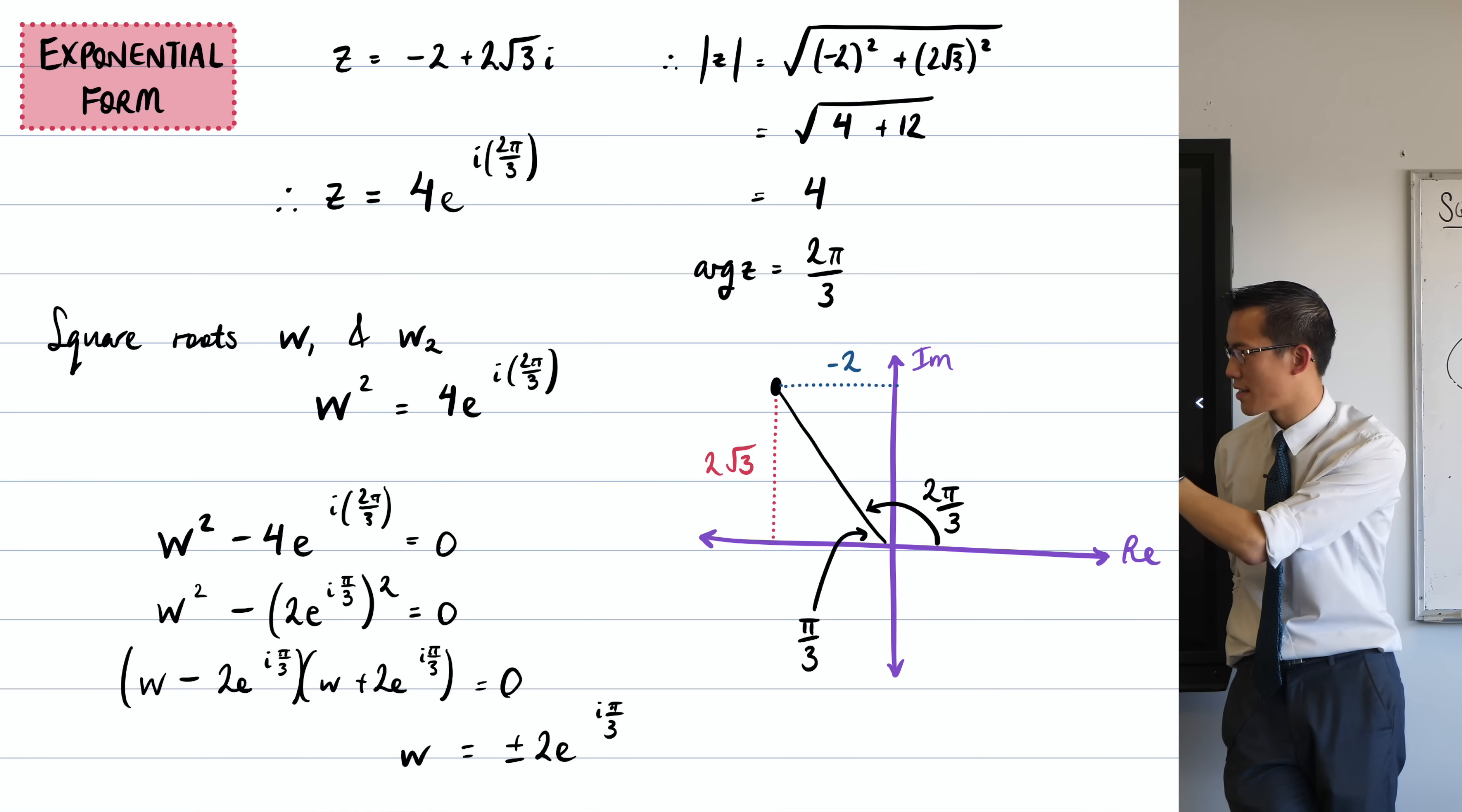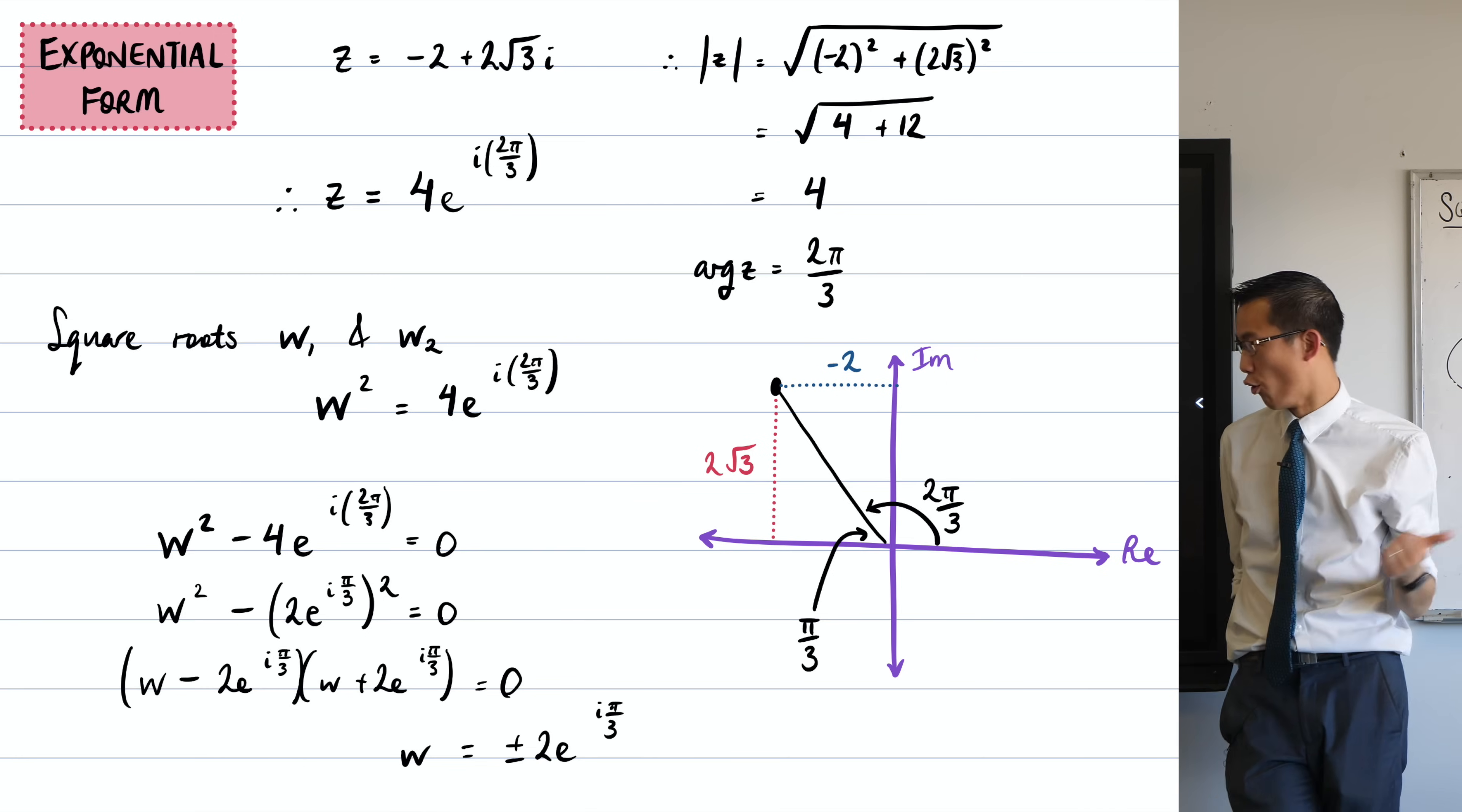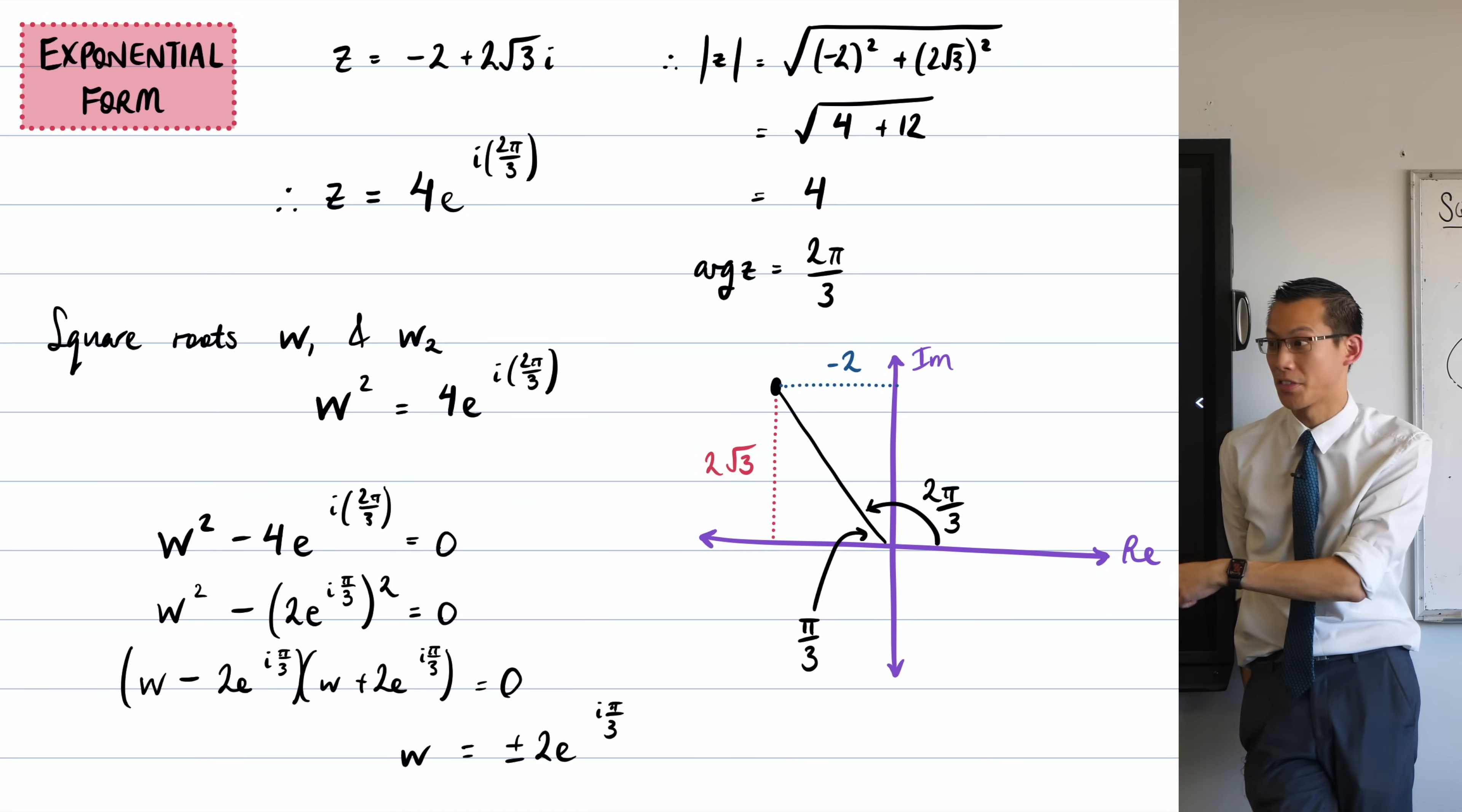From there, you can see my factorization and then here is my answer. Now, unlike in rectangular form, it does make sense to just put the plus minus out the front. It's completely unambiguous what that means. So this is a more concise way to write it,